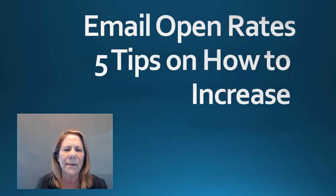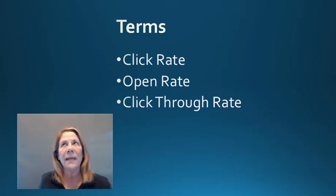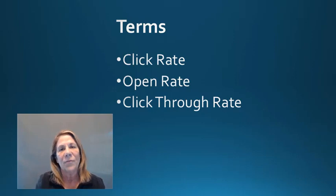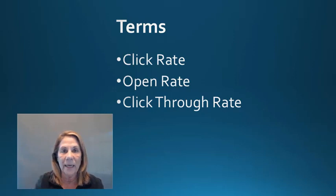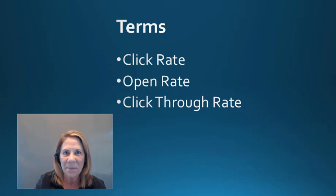You keep hearing people talking about click rates, open rates, and click-through rates — what does all that mean? A click rate is when you send your email to somebody's inbox and they click it, so you know they've paid attention to it. Open rate is when they've opened the email and are reading it. The click-through rate is the average of them doing both — they've clicked it and they've opened it.